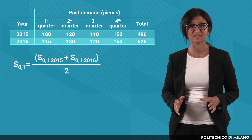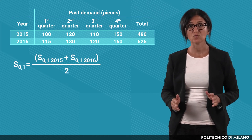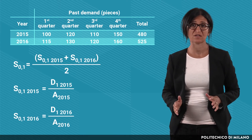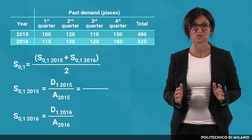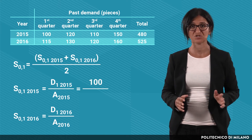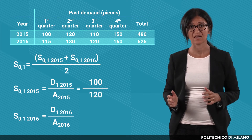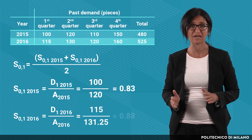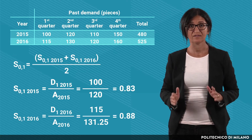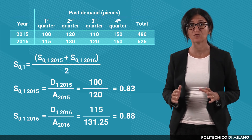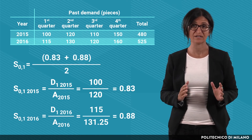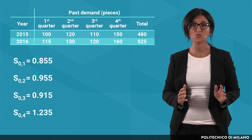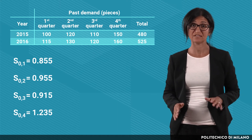As for the seasonality factors, let's start with the first quarter. We take the average of the seasonal factors computed in each year. For 2015, we divide the demand of the first quarter, 100 pieces, by the average in 2015, 120 pieces, and we obtain 0.83. If we do the same for 2016, we obtain 0.88. Therefore, the initial seasonal factor for the first quarter is the average between 0.83 and 0.88, that is 0.855. In the same way, we can compute the other seasonal factors, and we obtain those values.